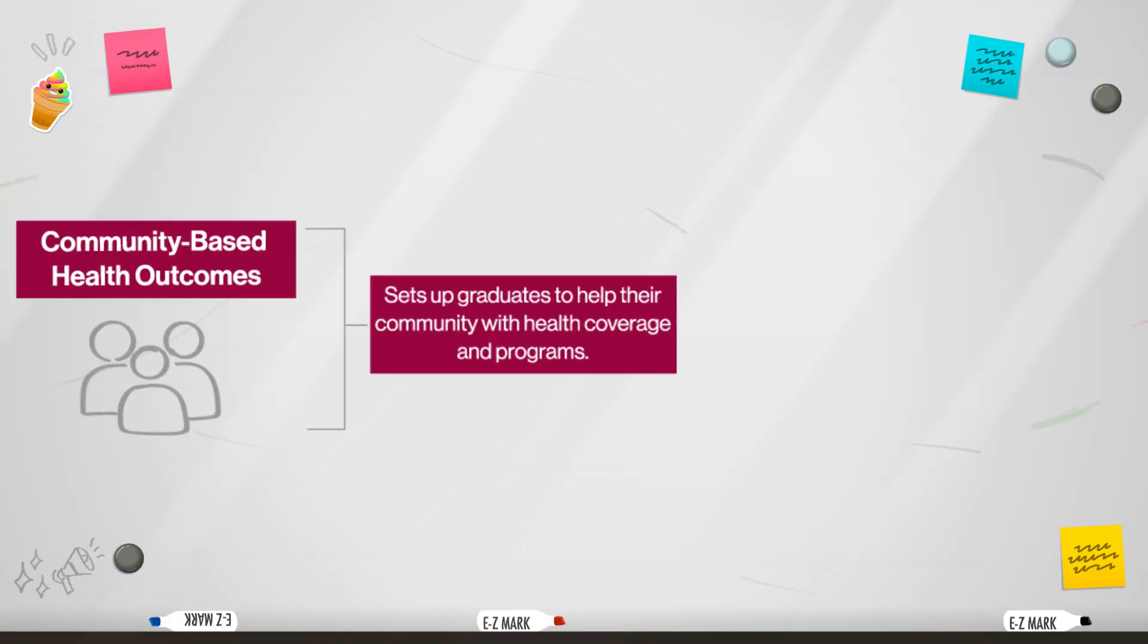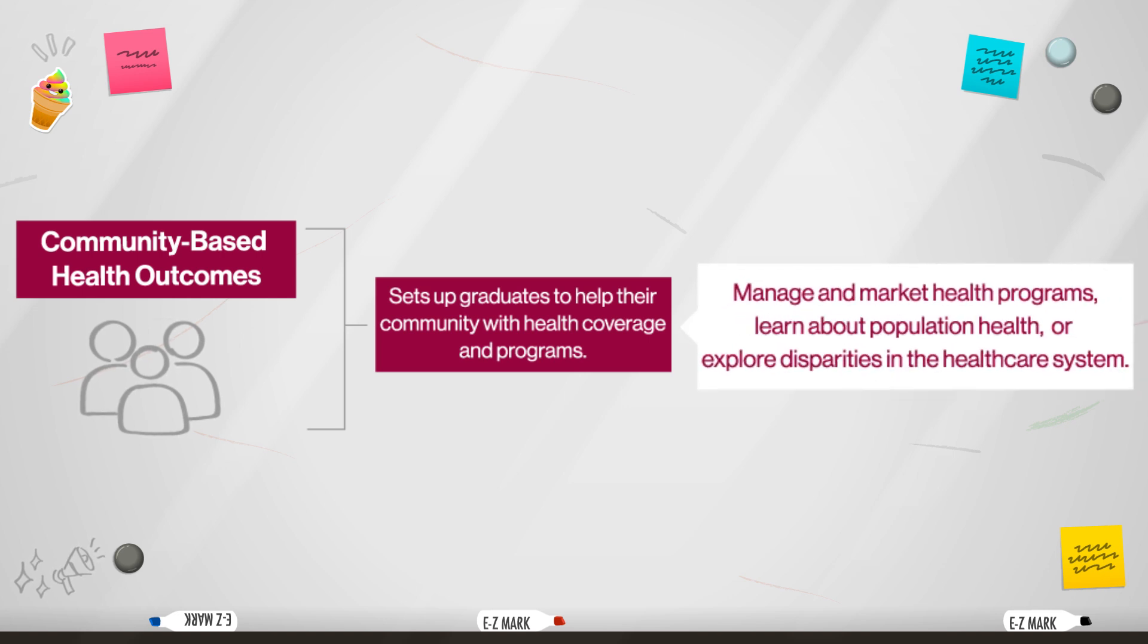The Community-Based Health Outcomes Track sets up graduates to help their community with health coverage and programs. You'll manage and market health programs, learn about population health, or explore disparities in the healthcare system. This is a great track for anyone looking to focus on caring for and working with their local community.